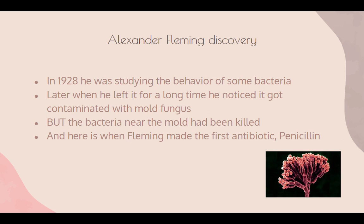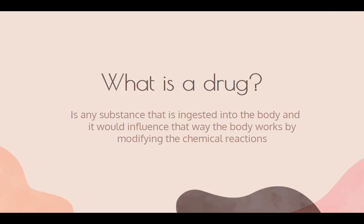Alexander Fleming's discovery in 1928: he was studying the behavior of some bacteria, and when he left it for a long time, he noticed it got contaminated with mold fungus. If you don't recall what mold fungus is, I recommend going back to Chapter 1. The bacteria near the mold got killed, so we can conclude that fungus can kill bacteria — and this is when Fleming made the first antibiotic, penicillin.